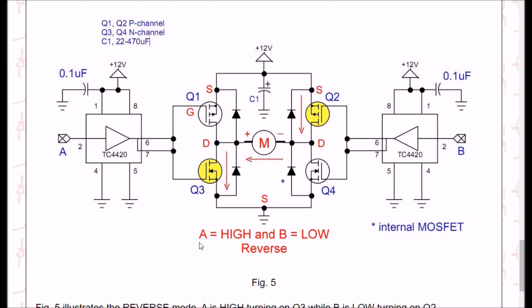Alright, in this condition we have A high and B low. A high input on A will output a high. It will turn on N-channel Q3. A low on B will have a low output, turning on P-channel Q2.